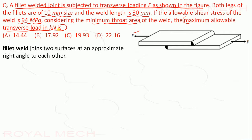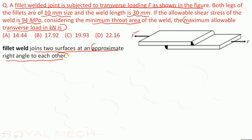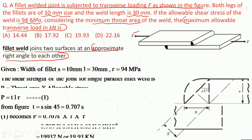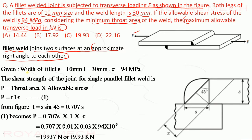First, let us understand what fillet welding is. A fillet weld joins two surfaces that are approximately at right angles to each other. Such a welding is called fillet welding. Now, from the question, the width of the fillet is 10 mm.